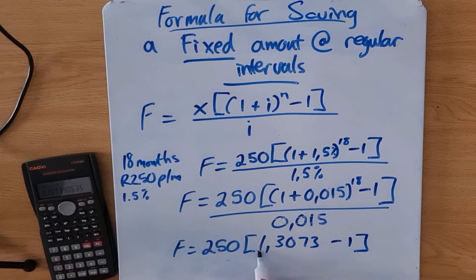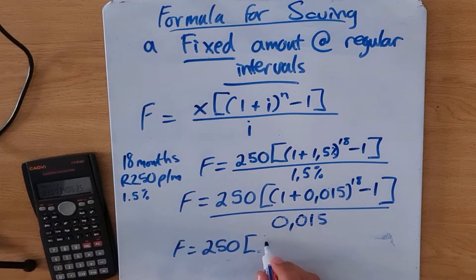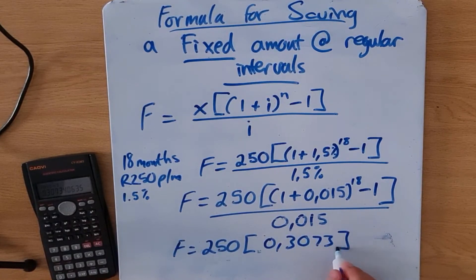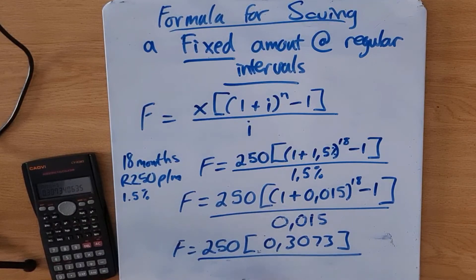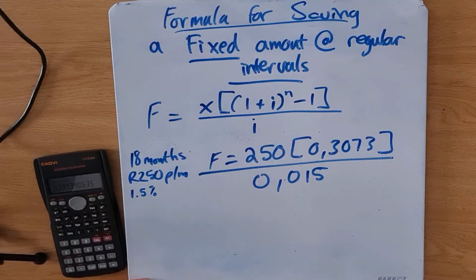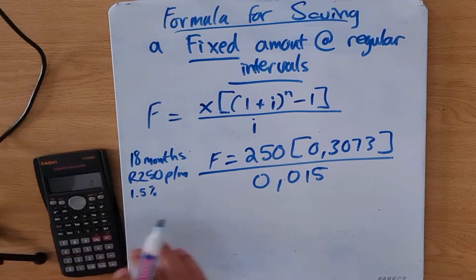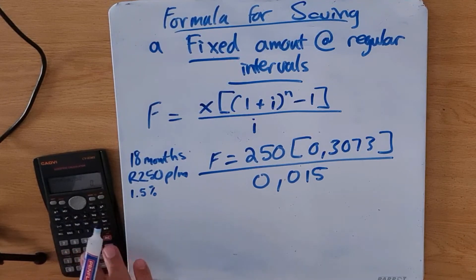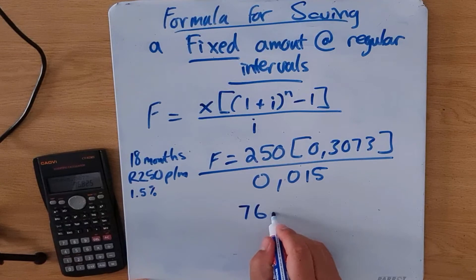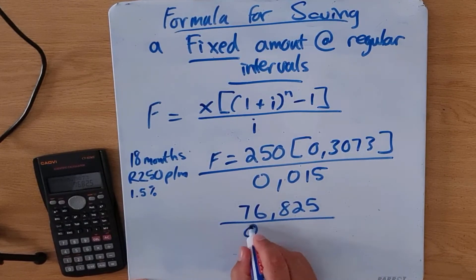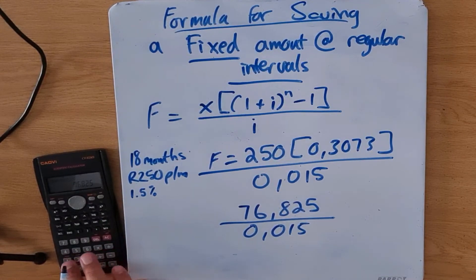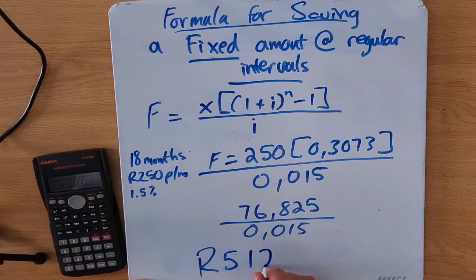Taking that answer of 1.3073 and subtracting one gives us 0.3073 — that's everything calculated inside the bracket. Now we multiply that by 250 and divide by 0.015. So 250 multiplied by 0.3073 gives 76.825, and dividing that by 0.015 gives an answer of 5121.6.